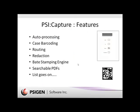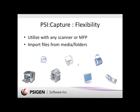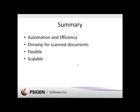When you look at SciCapture, how does it give you more efficiency and more automation? There's a wide variety of feature sets, which I'll show in the demo, giving an overview of how we can auto-process, barcode, route, redact, Bates stamp, and create searchable PDFs, all through simple setup and configuration. In the end, we give you flexibility to utilize the product with any scanner or multi-function peripheral and import files from media and folders anywhere on your network, providing automation, efficiency, and an on-ramp for scanned documents that gives you flexibility and scalability.